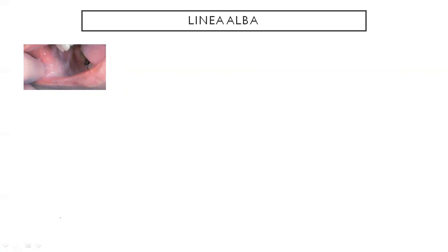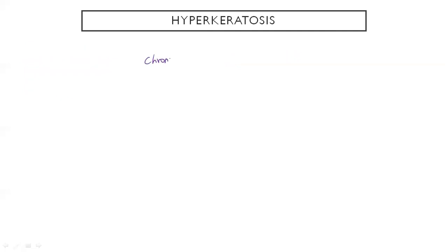Imagine biting your cheek — when you accidentally bite your cheek while eating, you feel a sensation. That is linea alba. It looks like a white line on the buccal mucosa. It is a type of frictional hyperkeratosis, which is a common white lesion caused by chronic friction on the mucosa.